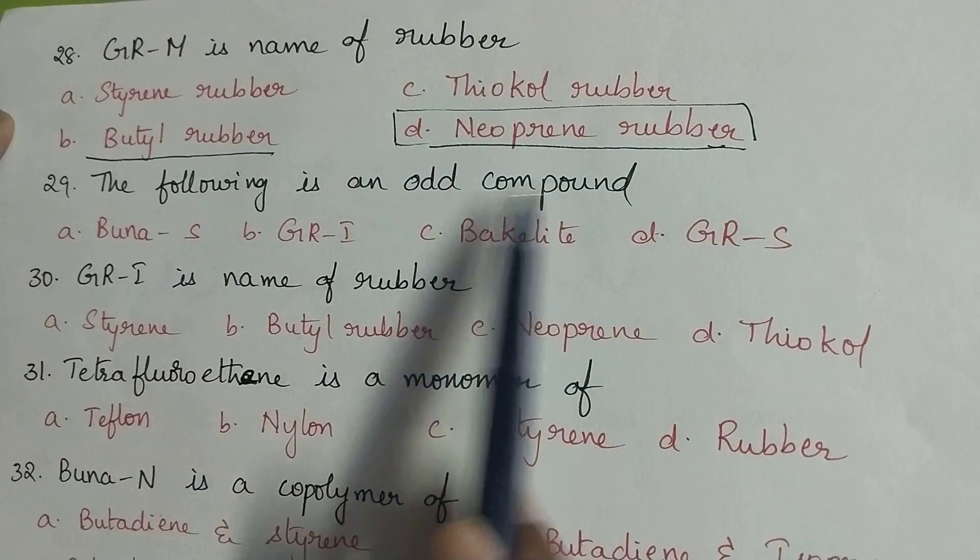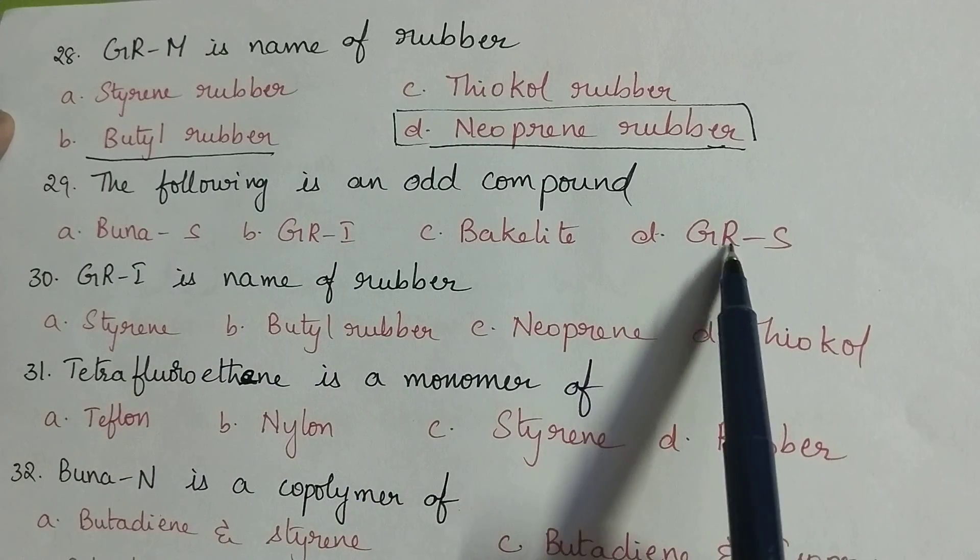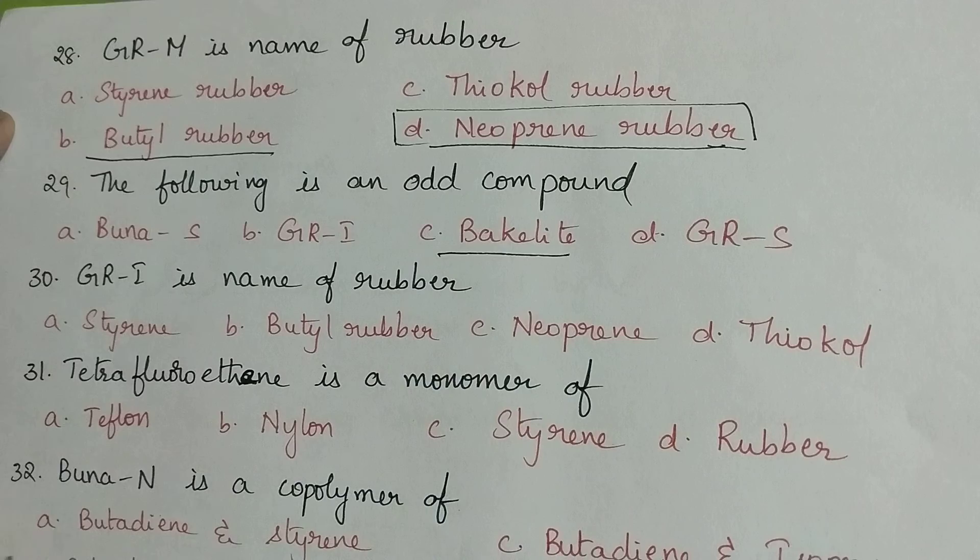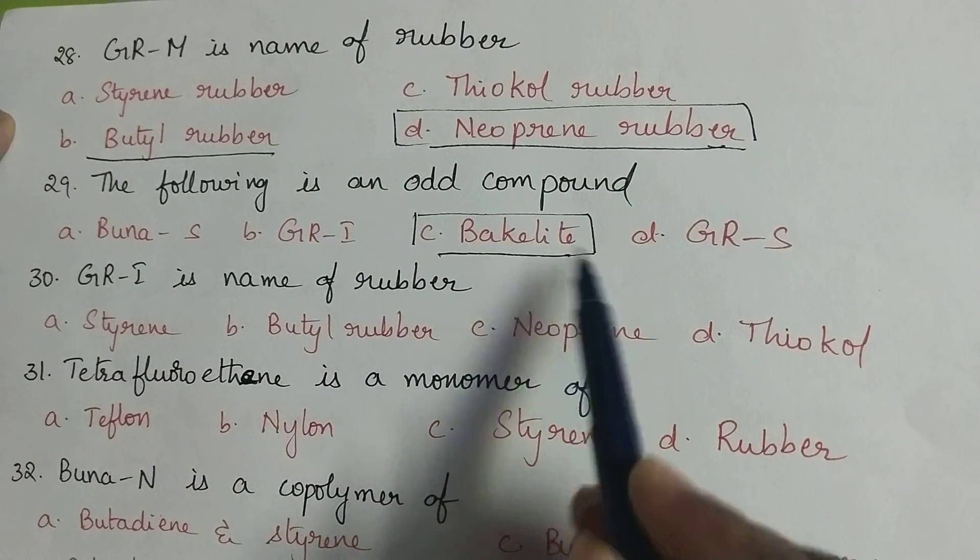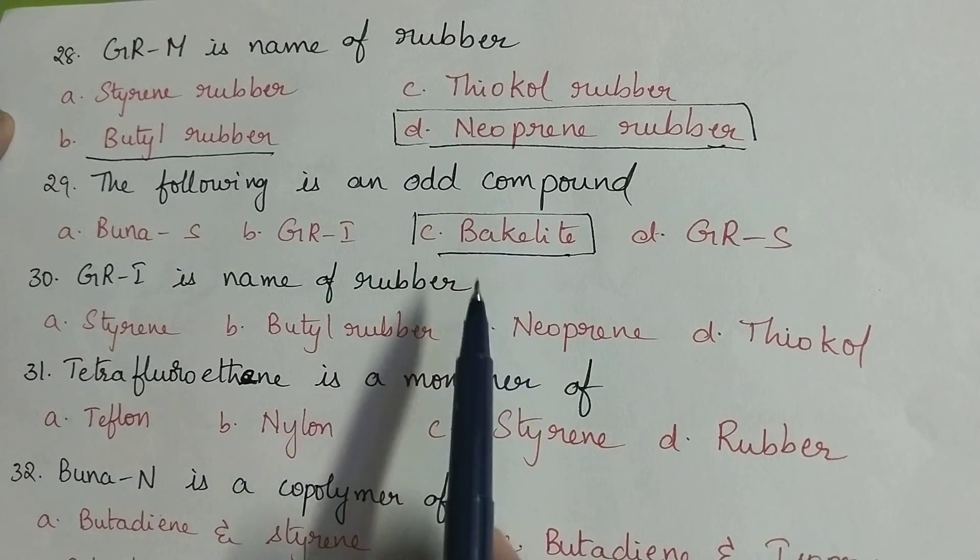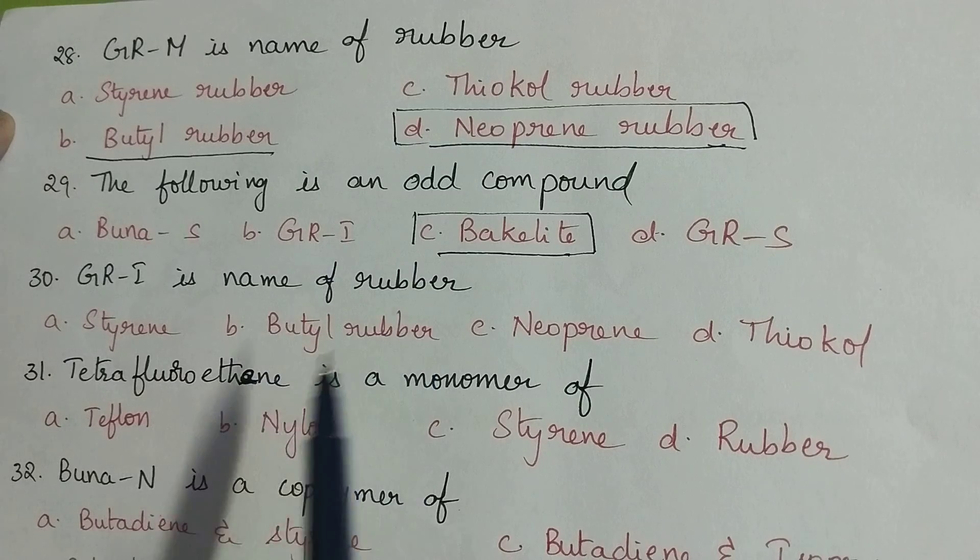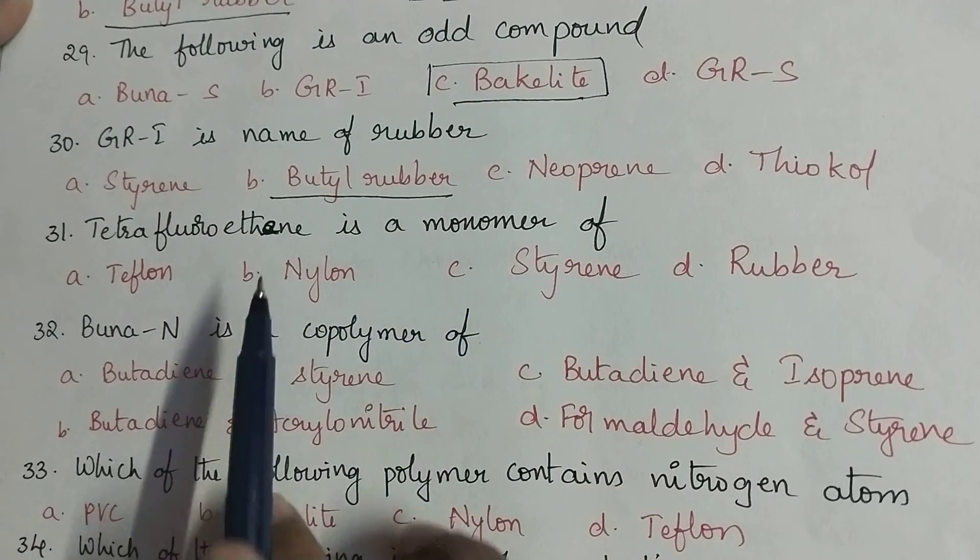The following is an odd compound: GR-I, Buna-S, GR-S comes under elastomers whereas the bakelite is the thermoset plastic. So option C is the right answer, bakelite is the odd compound. GR-I is name of rubber, that is butyl rubber.